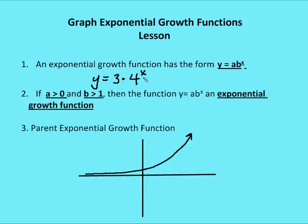The value for y can never be a negative number, regardless of what x is — even if x is a negative number. As I move along the x-axis in a negative direction, the value of y gets closer and closer to zero. As I move in a positive direction, y gets closer and closer to positive infinity. But y itself is never going to be equal to zero.